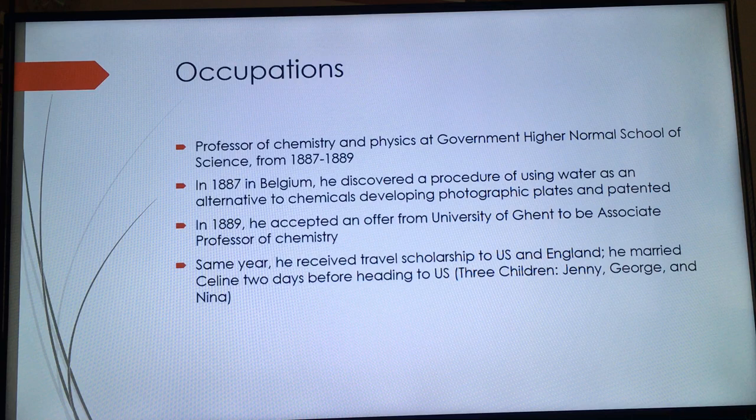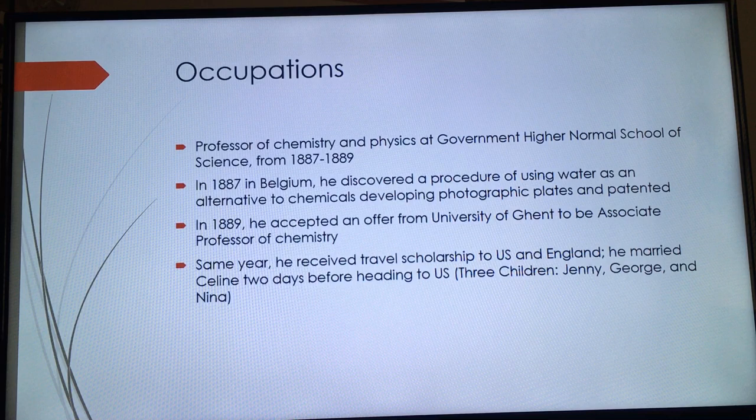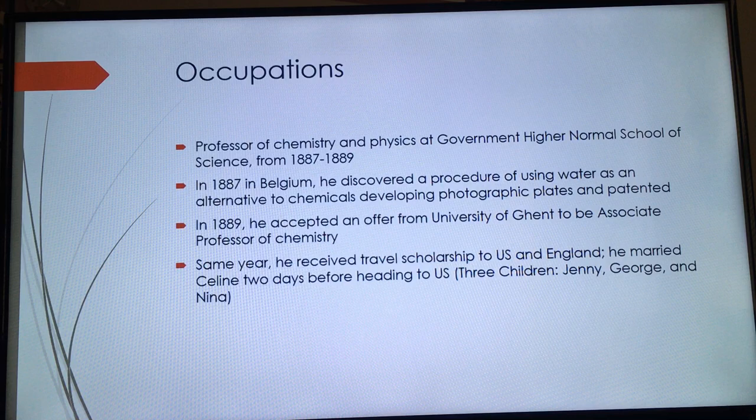In 1889, he accepted an offer from the University of Ghent to be associate professor of chemistry. That same year he received a travel scholarship to the U.S. and England. He married Céline, his mentor's daughter, two days before heading to the U.S. His mentor F. Swarts had opposed their relationship, but Baekeland decided to run away with her. They later had three children together: Jenny, George, and Nina.